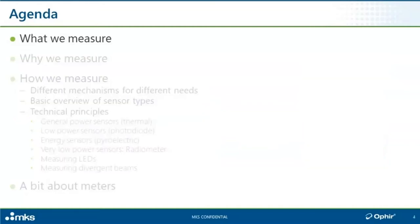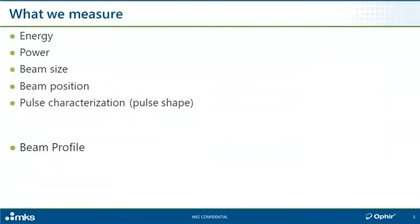So first of all, what we measure — the parameters for which we provide measurement instruments. These are: laser beam energy, power, beam size, and beam position, and temporal pulse characterization — the temporal pulse shape. We also have a very extensive, very advanced line of beam profiling solutions; that's a whole subject in itself and we will not really be covering that in this discussion. There are other people far more expert in that than I am, and we do host webinars on that topic from the Spiricon and Photon brands.